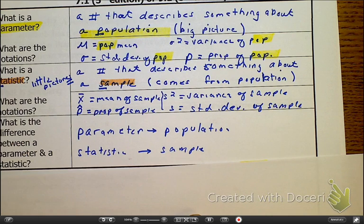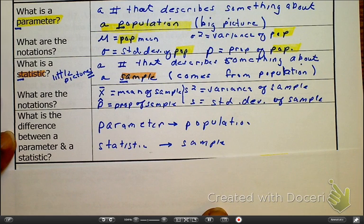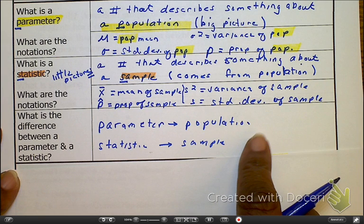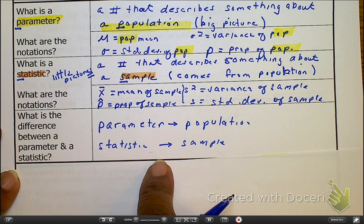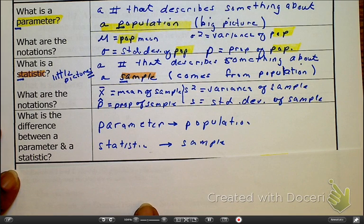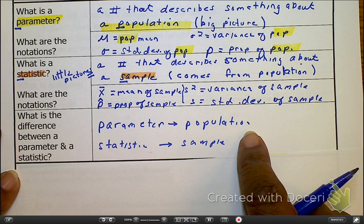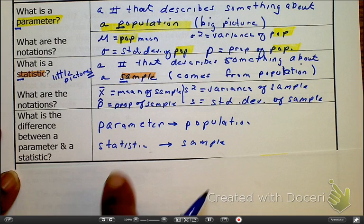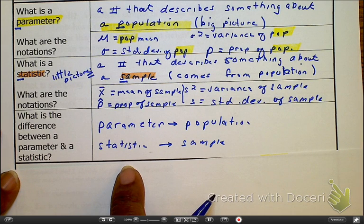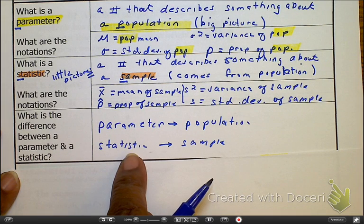So, as I consider what is the difference between the parameter and a statistic, remember, the parameter is information coming from the population. Statistic is information that comes from the sample. So, as I talk about parameter, I'm talking about all Etiwanda students. Let's say I'm asking about the grade point averages of the entire population of Etiwanda students. Well, that would be parameter. But then, when I talk about the grade point averages of my students, because my students is one sample of the entire population of Etiwanda students, that information would be the statistic.